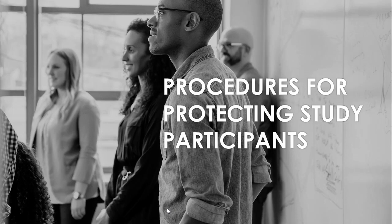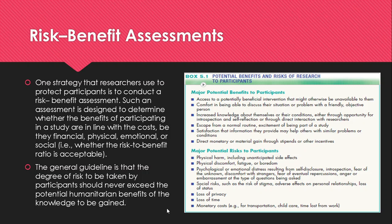What are the procedures for protecting study participants? Now that you are familiar with the fundamental ethical principles for conducting research, you need to understand the procedures researchers follow to adhere to them. These are the procedures that should be evaluated in critiquing the ethical aspects of a study. One strategy researchers use to protect participants is to conduct a risk-benefit assessment. Such an assessment is designed to determine whether the benefits of participating in a study are in line with the costs — be they financial, physical, emotional, or social — and whether the risk-to-benefit ratio is acceptable.